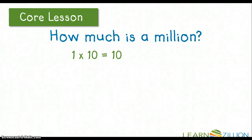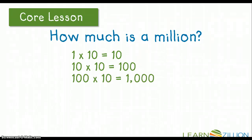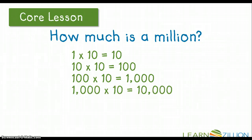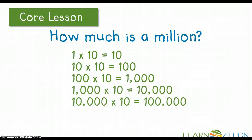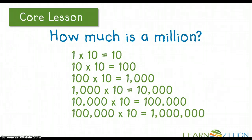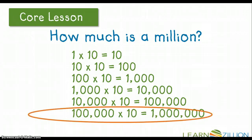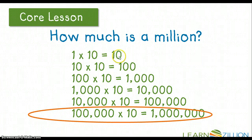So the question I'd like you to think about is: how much is a million? Let's start with our ones. 1 times 10 equals 10. 10 times 10 equals 100. 100 times 10 equals 1,000. 1,000 times 10 equals 10,000. 10,000 times 10 equals 100,000. And 100,000 times 10 equals 1,000,000. So 1,000,000 equals 10 groups of 100,000. If you notice, I have one zero as I'm multiplying my one by 10, and my product — the answer to the multiplication problem — has one zero.